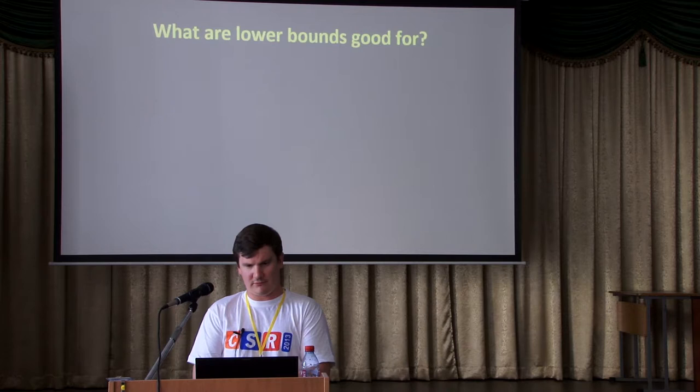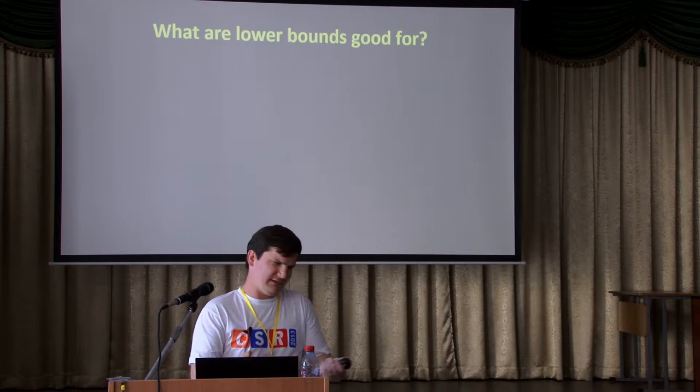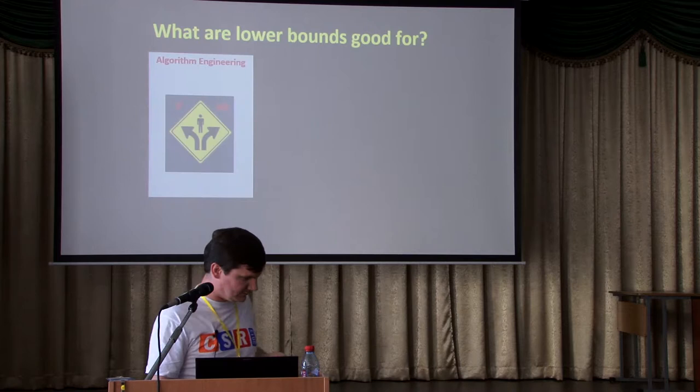What are lower bounds good for? They're impossibility results — they seem to just say you can't do that. But in fact lower bounds can be good in many ways. One is algorithm engineering: if we show that a problem is really hard to solve in a particular mathematical formalization, we're steered away from those difficult formalizations and encouraged to try other approaches.